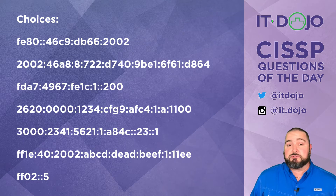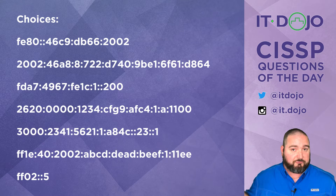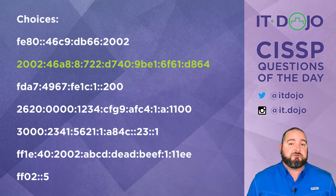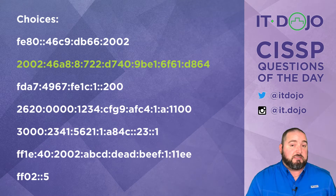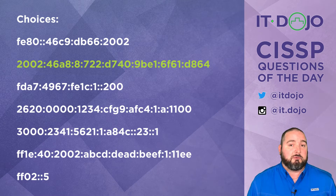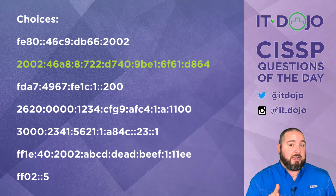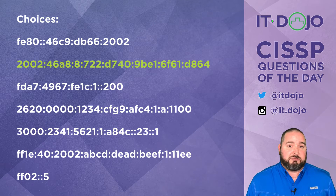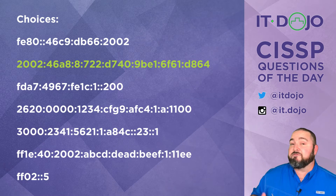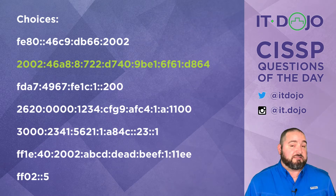Choice number two: 2002 colon 468 and a bunch of other stuff — yes. If you look closely, the fact that it begins with a 2 tells you that it is a globally routable prefix. Anything that begins with a 2 or a 3 is currently in the globally routed prefix range. If you count it all out, you see there are eight blocks each containing 16 bits of data, and those eight blocks times 16 bits is where you get your 128-bit IPv6 address from. So that is absolutely a valid globally routable IPv6 address — specifically a destination unicast IPv6 address.